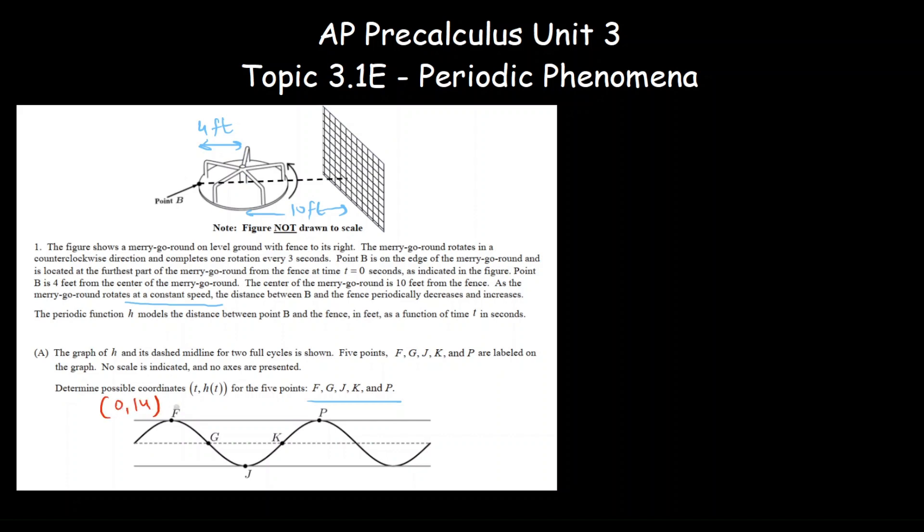Its period is three seconds. What is three divided by four? Because that's where it will change from maximum to the midline. Three over four is 0.75. So this will become 0.75 comma, and the height will be ten feet because that will be right at the middle.